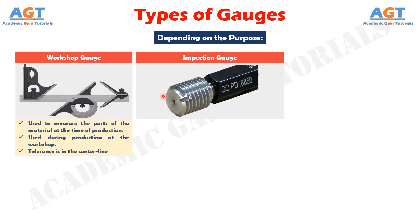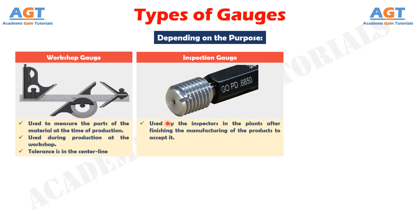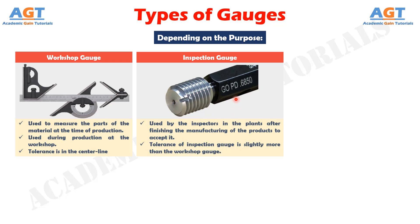Inspection gauge. An inspection gauge is defined as the gauge which is used by the inspectors in the plants after finishing the manufacturing of the products to accept it. As the acceptance or rejection is depending on the gauge measurement, the tolerance of this inspection gauge is slightly more than the workshop gauge. If the tolerance of the material part is high then it is accepted, otherwise the material should be rejected.